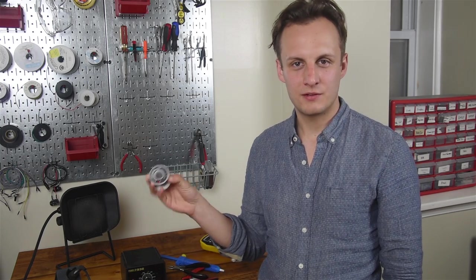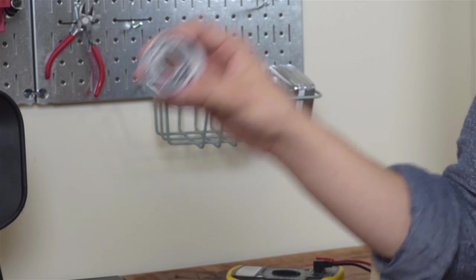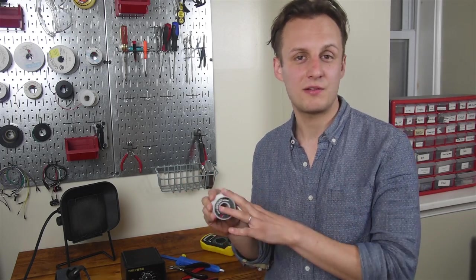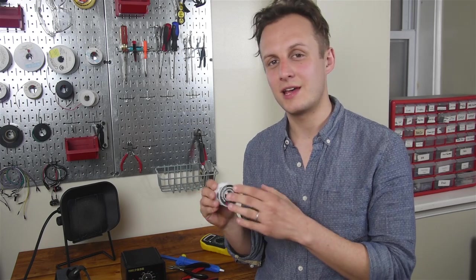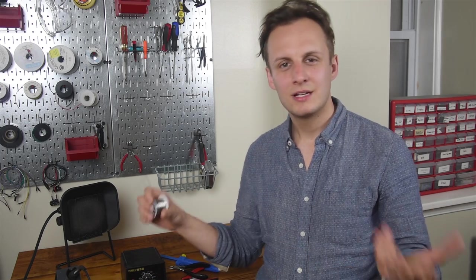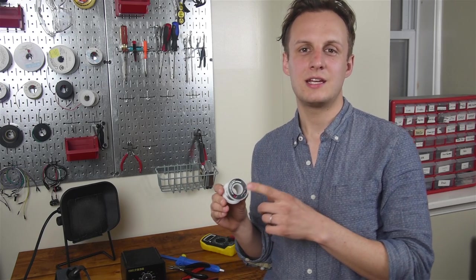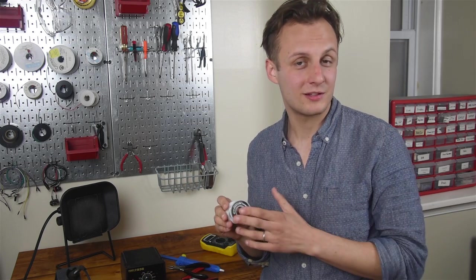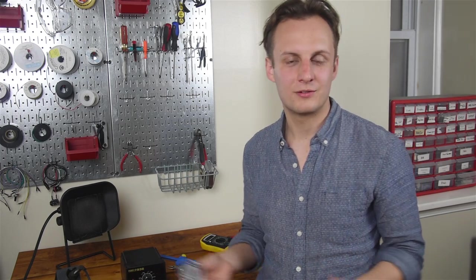Now, we also need solder, of course. I recommend getting what's called 60-40 rosin core solder. This is the old-school lead solder that's really bad for the environment, and you definitely don't want to eat it. But man, is it nicer to work with than the newer lead-free stuff. So if you're not building these to sell to other people or anything, I recommend going with the lead solder because it's much more forgiving, it's more dependable over time, it's cheap, and at least as of now, it's still available. So what you want is 60-40 rosin core solder, also called lead or tin solder.